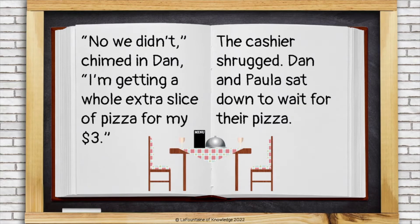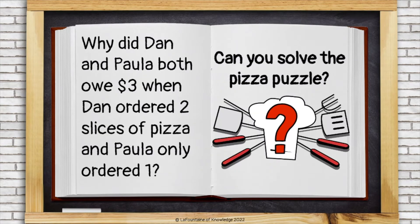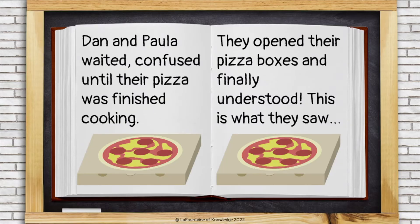The cashier shrugged. Dan and Paula sat down to wait for their pizza. Why did Dan and Paula both owe $3 when Dan ordered two slices of pizza and Paula only ordered one? Can you solve the pizza puzzle? Dan and Paula waited, confused, until their pizza was finished cooking. They opened their pizza boxes and finally understood. This is what they saw.